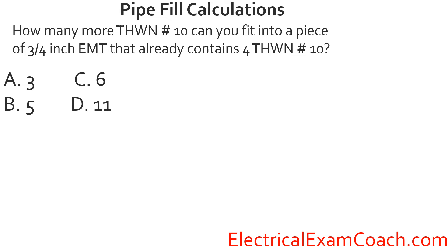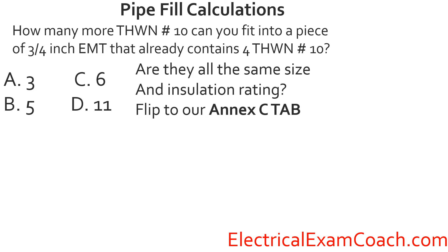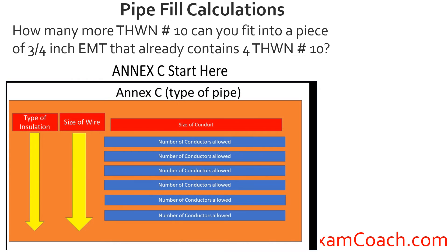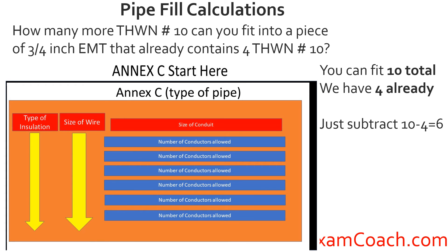Practice problem: How many more THWN number 10 conductors can you fit into a piece of 3/4-inch EMT that already contains four THWN number 10s? Are they all the same type and insulation? Yes. Head to Annex C, find EMT — not the A version — cross to the page number, read the black bold heading, find THWN insulation and size 10 wire, come across the top to 3/4-inch conduit and tee off. The table shows we can originally fit 10. Since four are already in the pipe, 10 minus 4 equals 6 — we can fit six more.